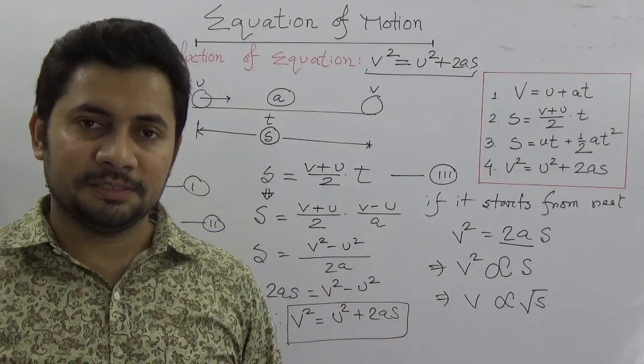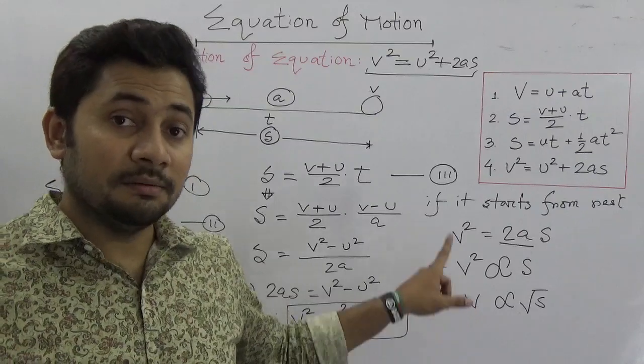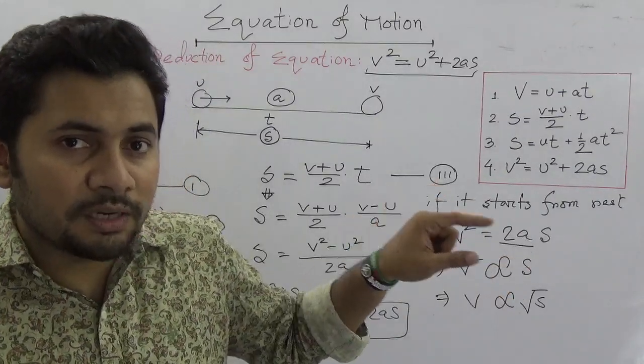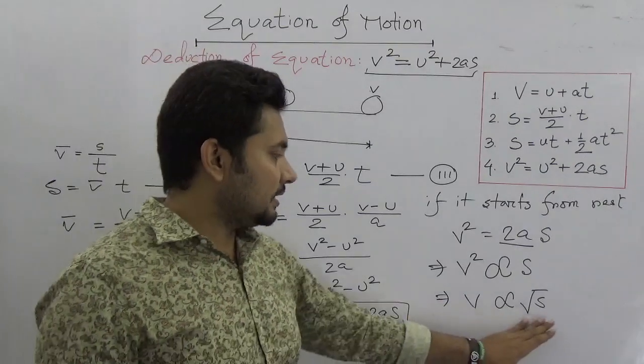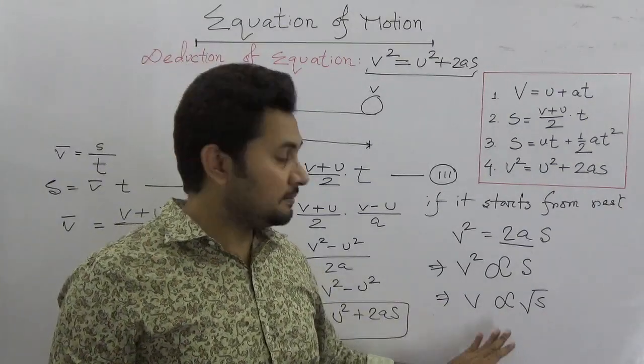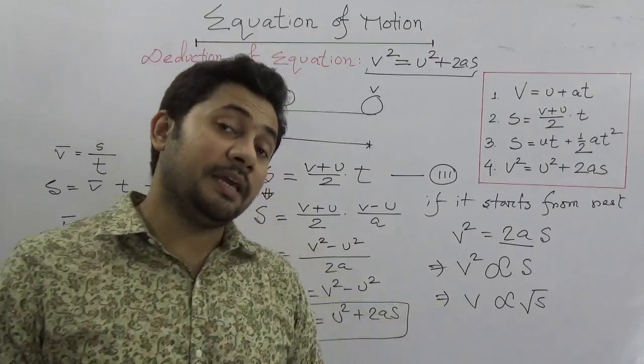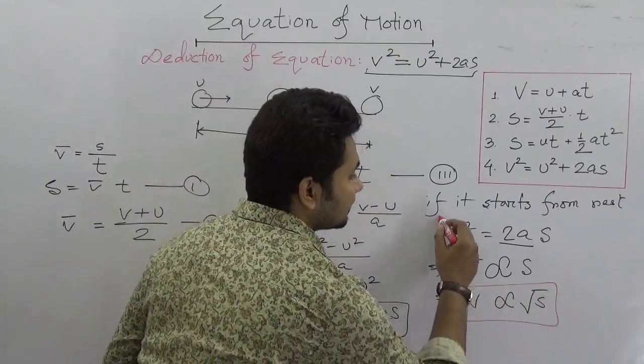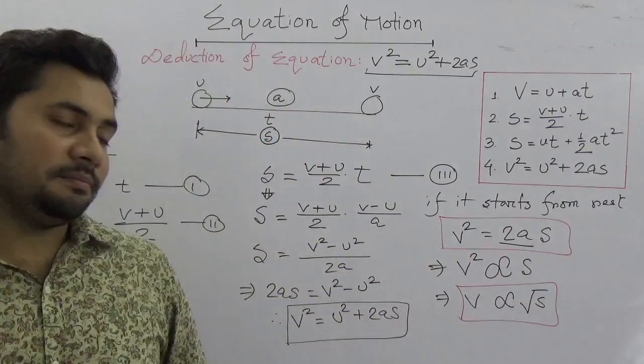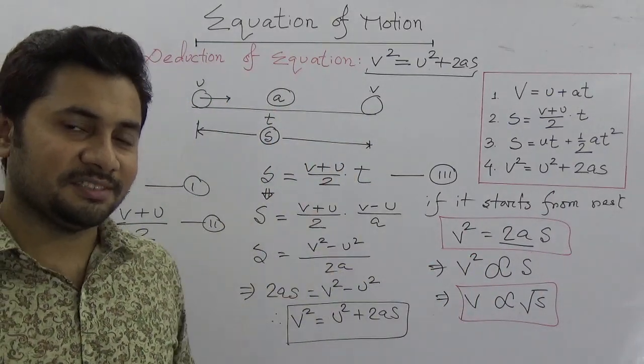v is completely depending on the square root of s. That means there is a very positive relationship between these things. So we have another equation and also a relation. I've completely explained the deduction process.